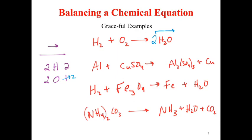We put a two in front of water. That two applies to everything after it up to a plus sign. So now the right-hand side has two oxygens — matching the left. But now we have to go back and check our work. Hydrogen on the left: two. Hydrogen on the right? There are two H2O molecules, so there's a total of four hydrogens on the right. Not balanced. I need a two in front of the hydrogen on the left.